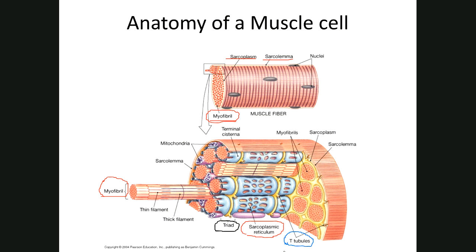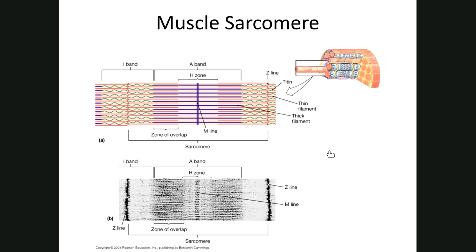These units are called sarcomeres — sarco means flesh, mere means unit or part. Sarcomeres are flesh units extending from one Z-line to another. The Z-lines are visible in the diagram, and from one Z-line to the next is one sarcomere — a contractile unit.